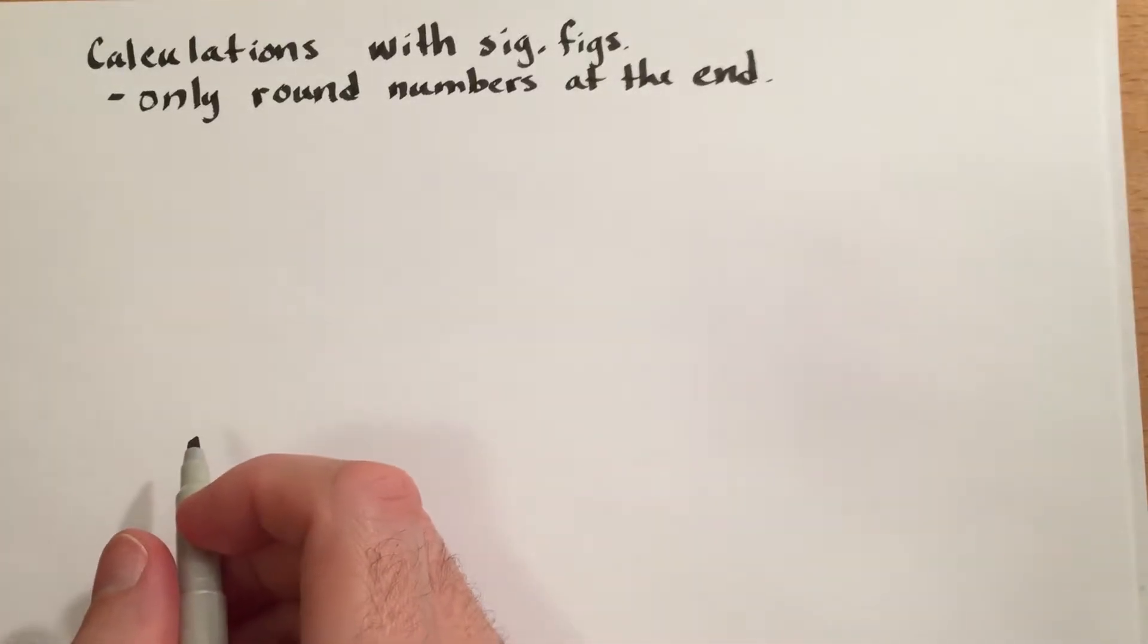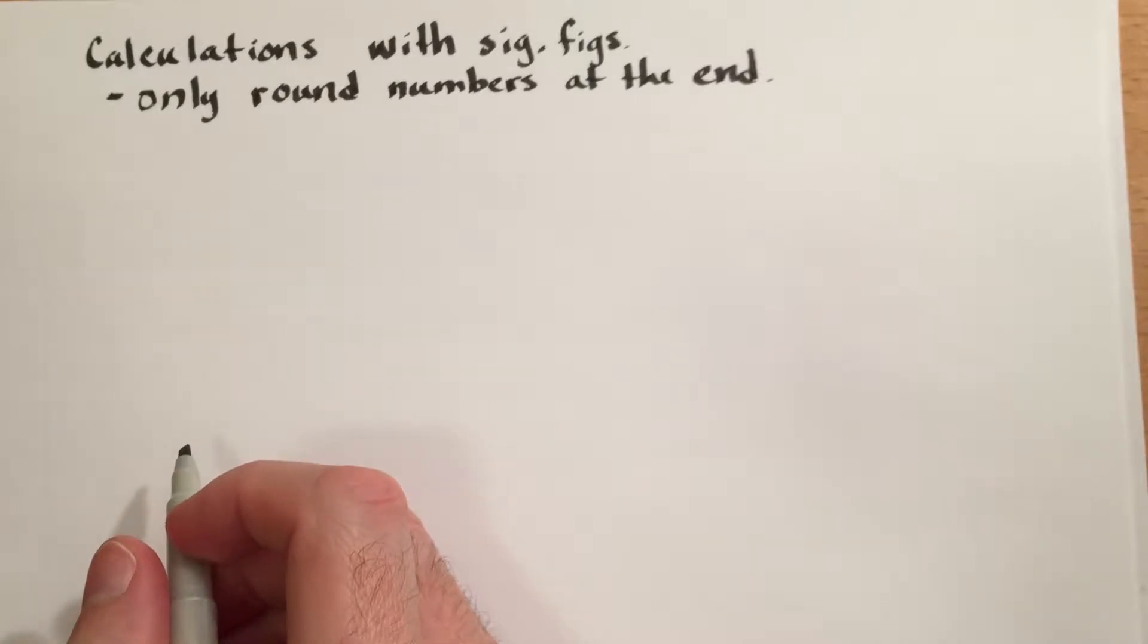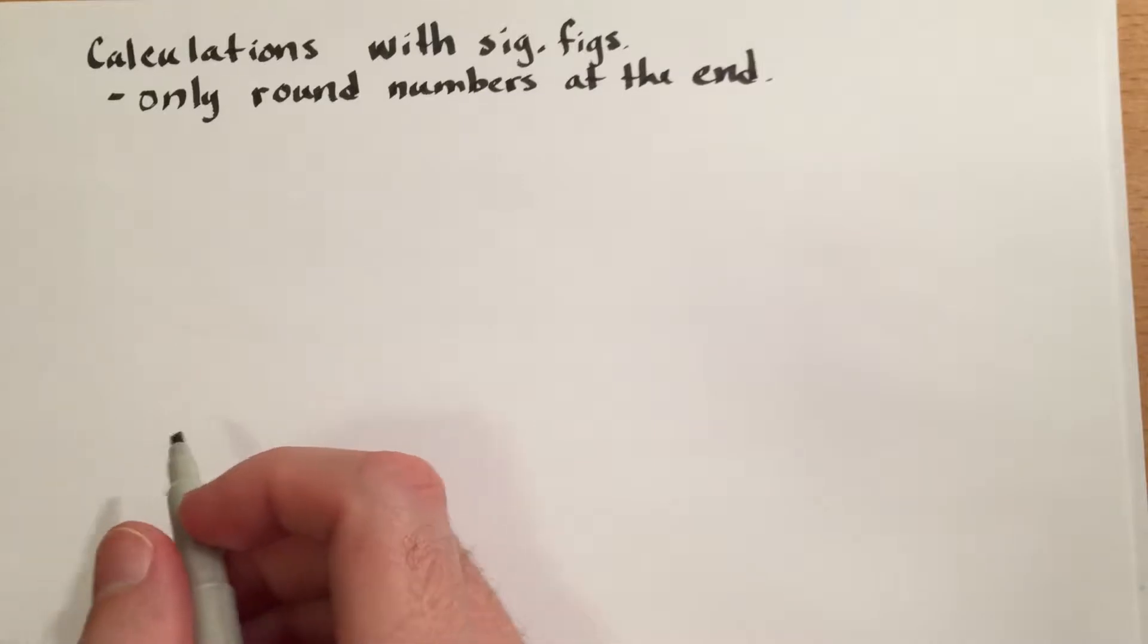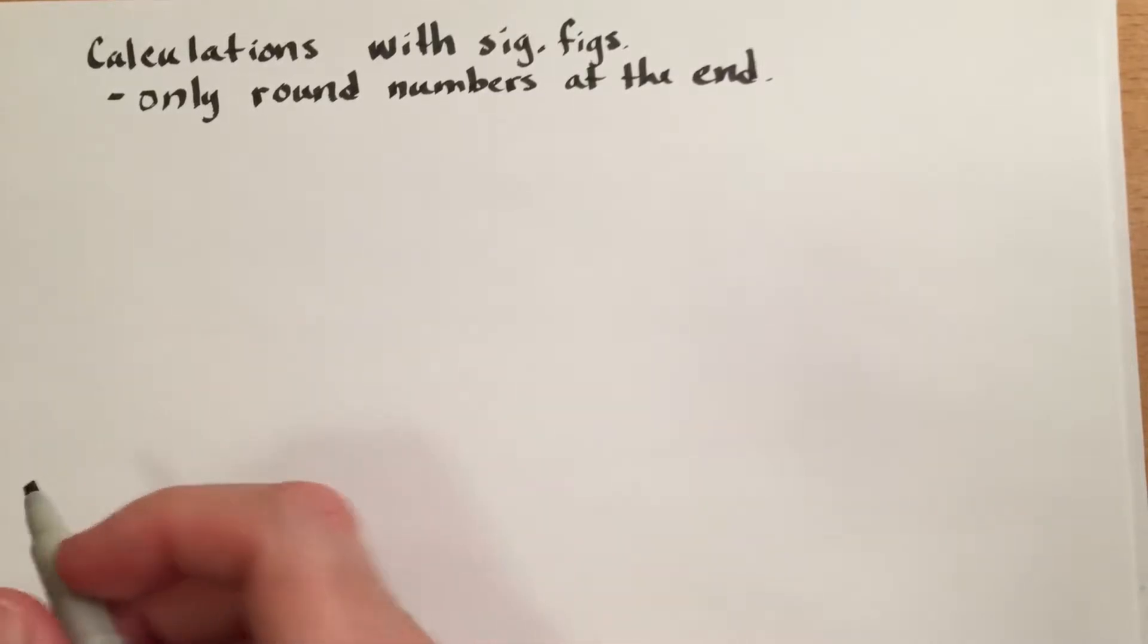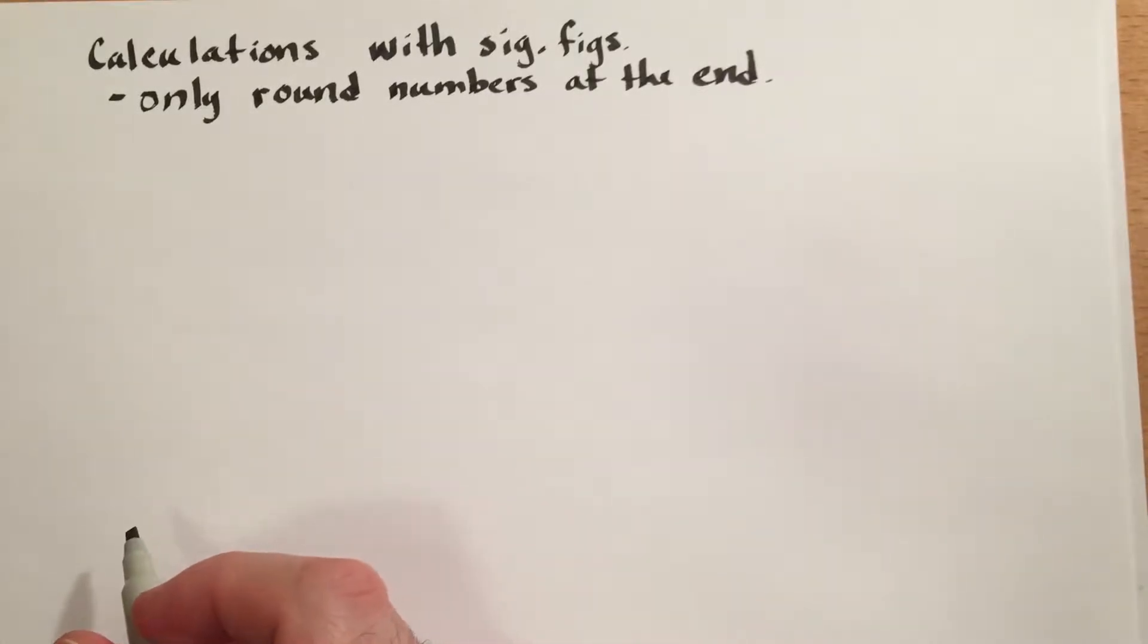These are some examples of calculations with significant figures. It is important to note that we will only round numbers at the end of a calculation and not throughout the calculation. This will avoid an increasing rounding error throughout the computation.